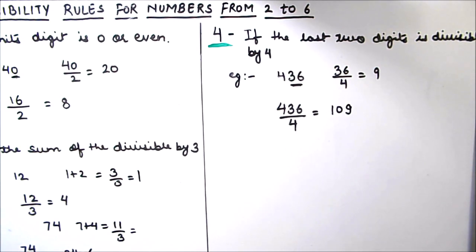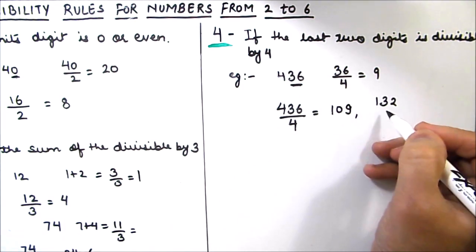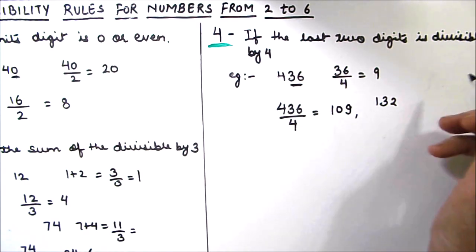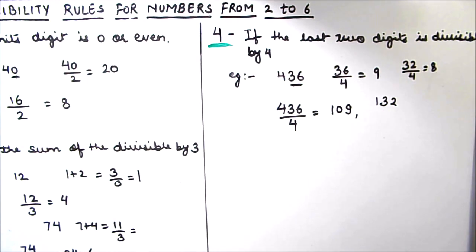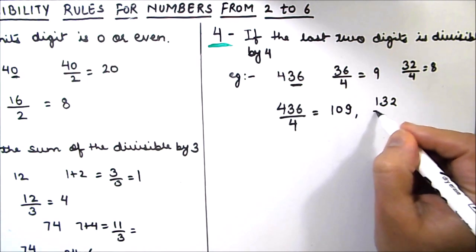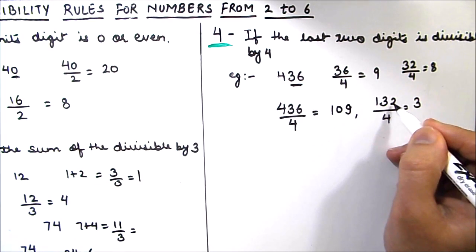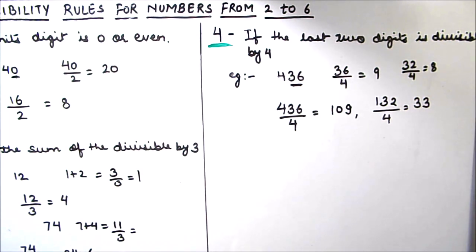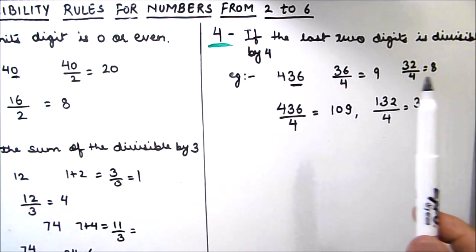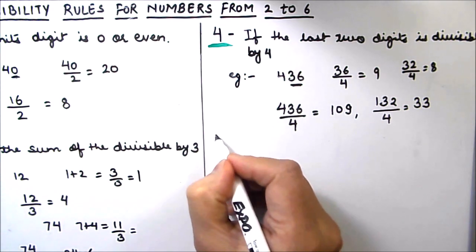Let us also check 132. The last two digits are 32, and 32 is fully divisible by 4 — 4 times 8 is 32. So 132 should be divisible by 4, and indeed 132 divided by 4 equals 33. So 132 is also divisible by 4. Hence the divisibility rule for number 4 is: the last two digits should be divisible by 4 for the number to be divisible by 4.